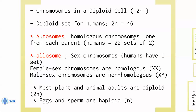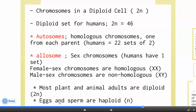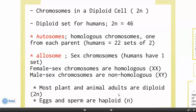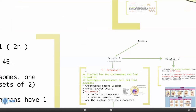Autosomes are homologous chromosomes, one from each parent. In the human body, we have 22 pairs of autosomes. Allosomes are the sex chromosomes — we have one pair. Female is XX, male is XY. Most plant and animal adults are diploid (2N), but only eggs and sperm are haploid (N).